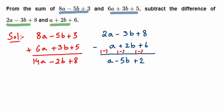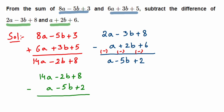Now we subtract the difference from the sum. We write the sum first: 14a minus 2b plus 8, and from this we subtract a minus 5b plus 2. Again we change the signs of the second expression — positive a becomes negative, minus 5b becomes plus 5b, and plus 2 becomes minus 2.